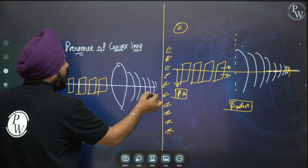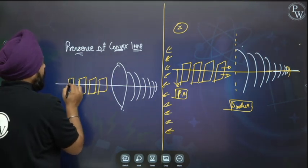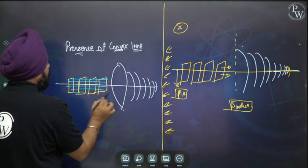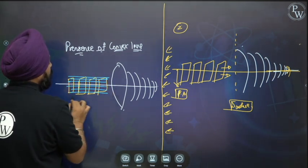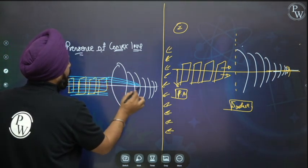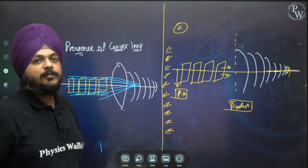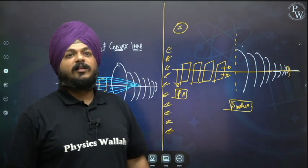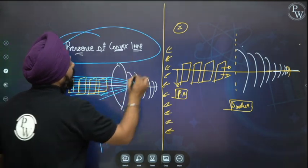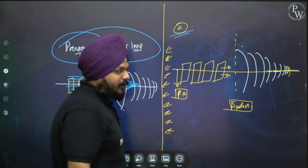From one side wavefronts come and after the convex lens they converge at a single point — that point is the focus. This happens because of the presence of the convex lens, not the concave lens.